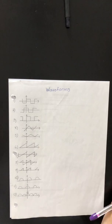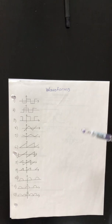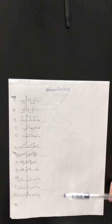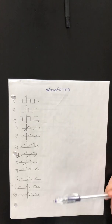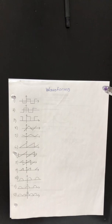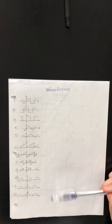Good morning. We're going to be starting our unit in Fourier analysis. Before you, you can see a list of 12 periodic waveforms, and there should be many that you recognize in here. There are square waveforms, triangular waveforms, sawtooth waveforms, and at the bottom we even have some sine and cosine waveforms.